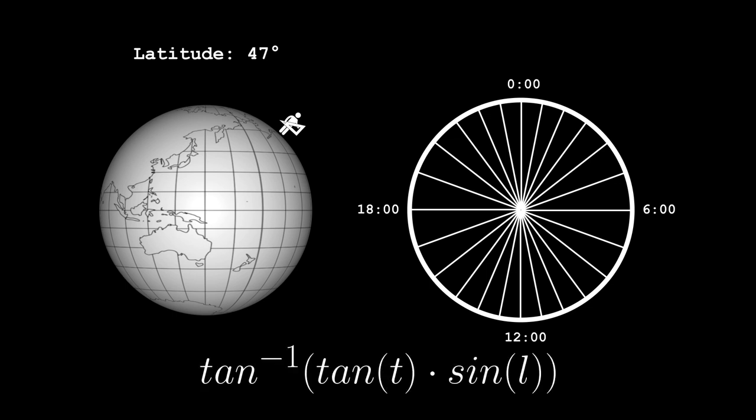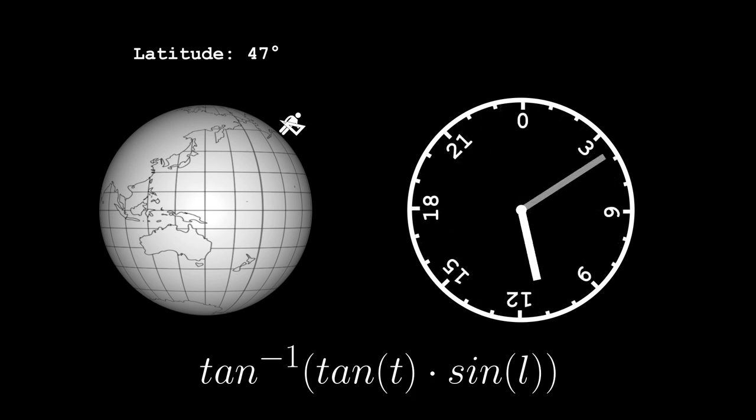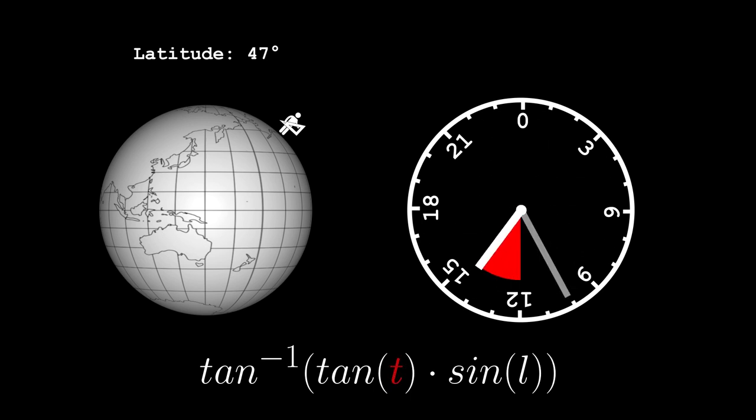In modern terms, we want to find the inverse tangent of the tangent of T times the sine of L. T is the angle from the 12 o'clock line to each desired hour line. Imagine the hour hand on a 24 hour clock, and the angle it makes with the vertical meridian. We will take this angle, which for hourlines will always be a multiple of 15 degrees, and plug it into the equation to get the angle it should be on our dial.